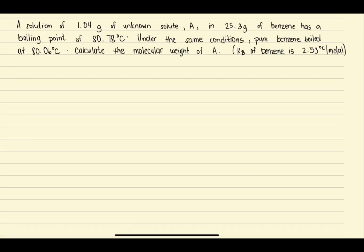We have the problem here: a solution of 1.04 grams of unknown solute A in 25.3 grams of benzene has a boiling point of 80.78 degrees Celsius. Under the same conditions, pure benzene boiled at 80.06 degrees Celsius. Calculate the molecular weight of the unknown solute. Given is the molal constant of benzene, which is 2.53 degrees Celsius per molal.